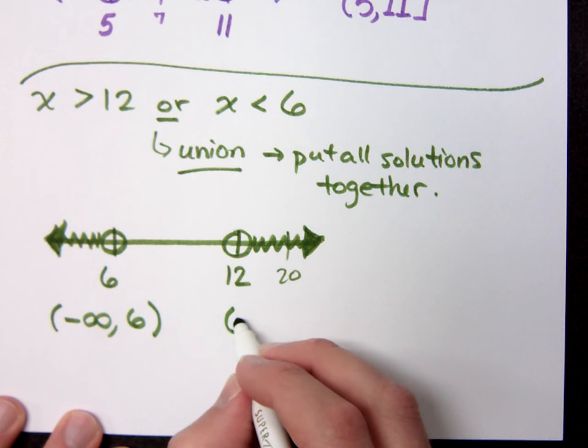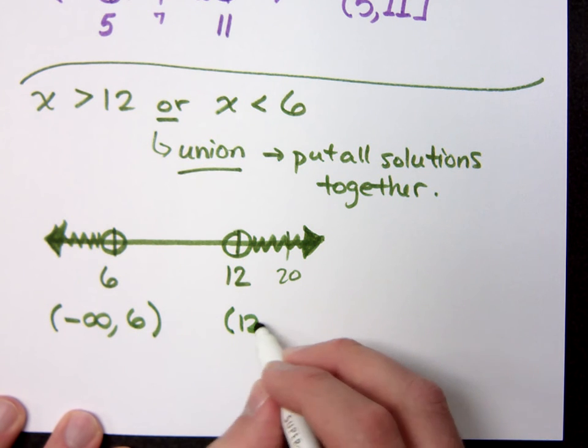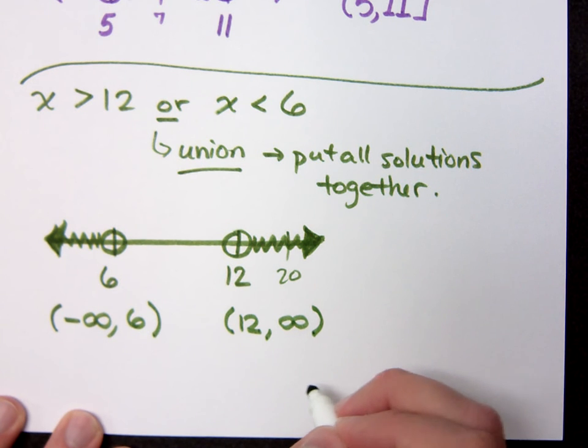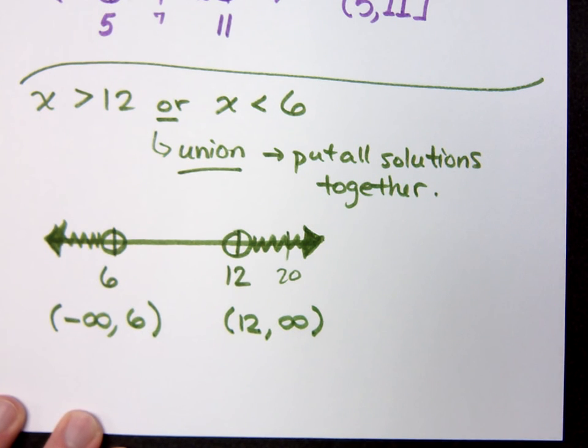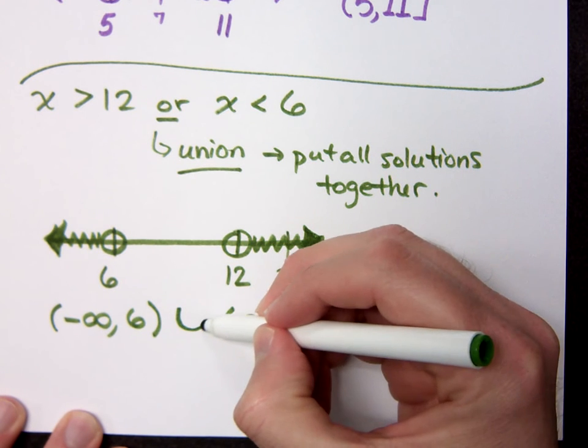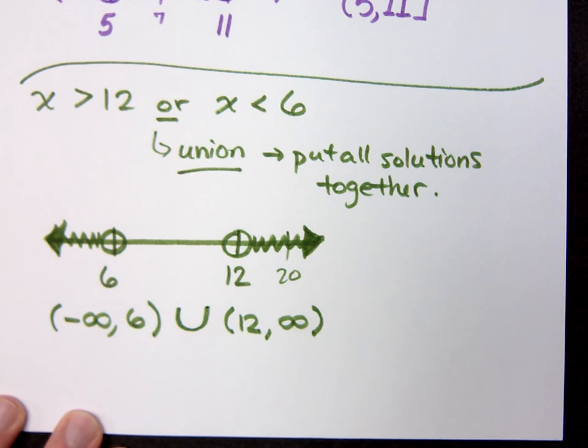How do I describe the other part? 12. Now, I need to join these guys together because union says put everything together. So what I do is I use this symbol right here. And this is my union symbol.